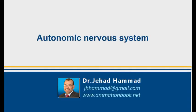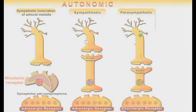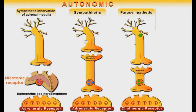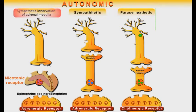The autonomic nervous system is part of the peripheral nervous system. It is composed of three divisions: sympathetic, parasympathetic, and sympathetic innervation of the adrenal glands.